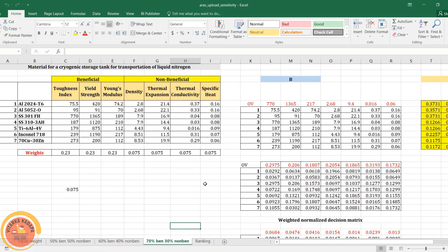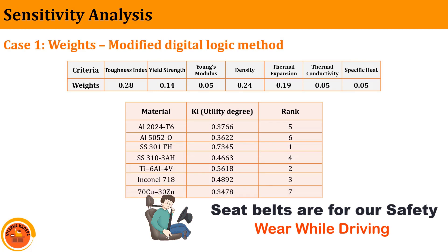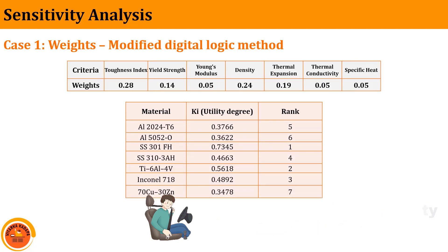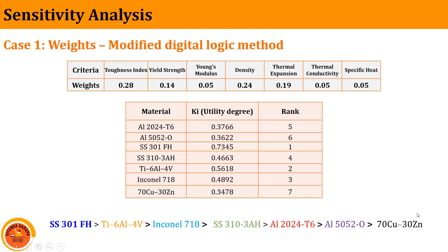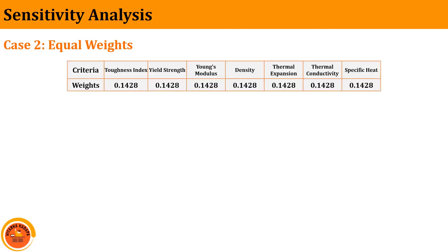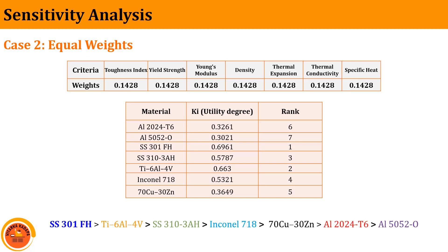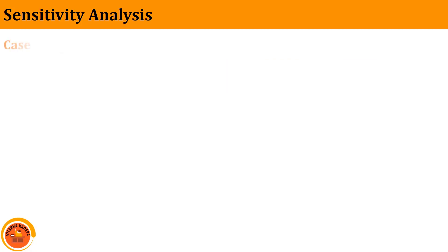Let me summarize all cases in a single structure. In case one — Modified Digital Logic method — these are the weightages and corresponding rankings using the ARAS method. The utility degree is the final output; whichever alternative has the highest utility degree is selected as best. Here SS301FH is the best alternative, followed by Titanium 6Al-4V, then Inconel. In case two — equal weightages — there is a slight change in rankings, but SS301FH remains the best material.